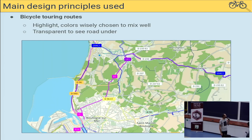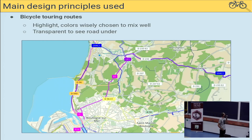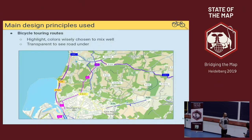For cycling routes, there are four levels: local, regional, national, and international. We wanted to render them all. It was difficult to find good colors that mix well when you stack them, and also difficult to stack them while still showing the infrastructure underneath.